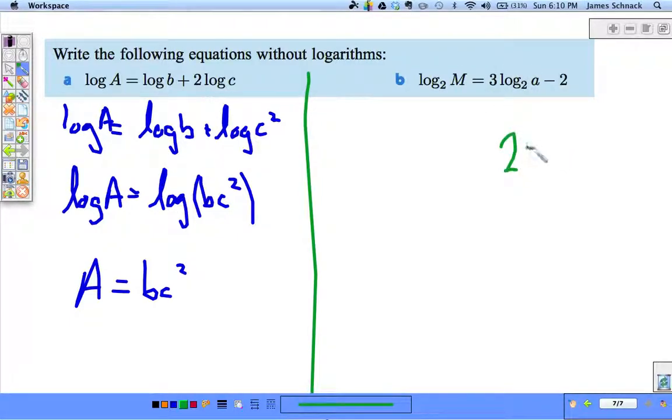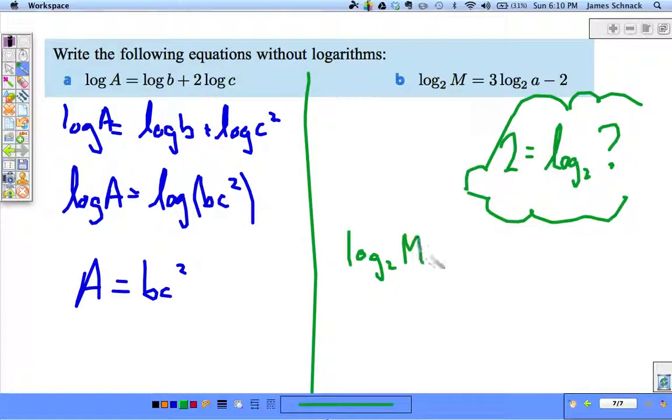So 2 equals log base 2 of what? Thought bubble. Thought bubbles are very useful, ladies and gentlemen. This is a sidebar. This is what we're trying to do here. 2 to the second is 4. Log base 2 of m equals log base 2 of a cubed minus log base 2 of 4.